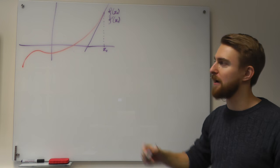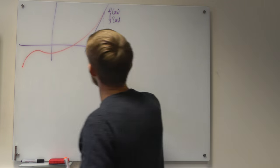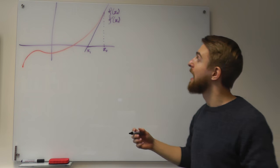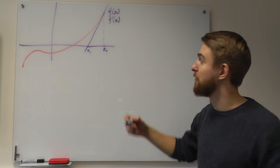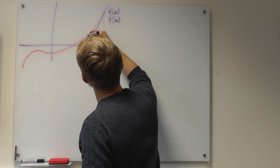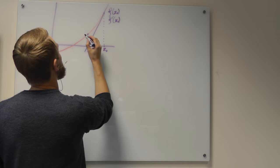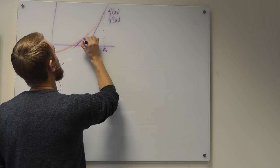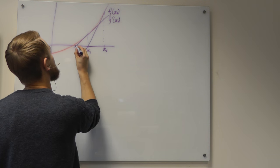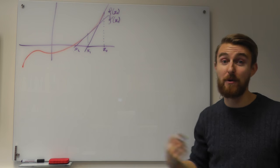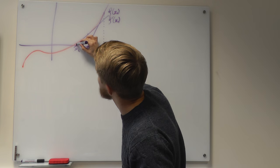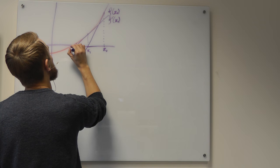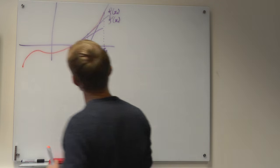Once we've got that tangent line, we use wherever the line crosses the x-axis as our next guess, so x₁ is at this point here — that's our next approximation to the root. That's one complete iteration, and now we can repeat that process. We've got our point x₁, we evaluate both the function and the gradient of the function at that point, and then use those two pieces of information to construct a tangent line, giving us our next approximation x₂. You can see we're already pretty close to the root, and we can keep repeating and getting closer and closer.